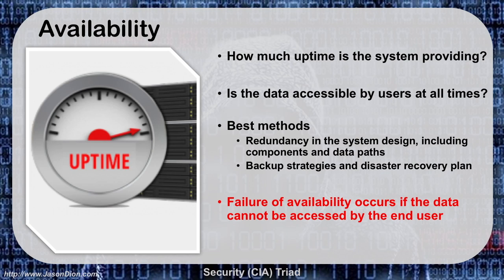The third component is availability — that's the A in CIA. Availability is all about uptime and accessibility. How much uptime is the system providing? Is the data accessible by all users at all times? The ways we achieve this include redundancy and backup. With redundant system design, including redundant components and data paths, we can ensure strong uptime. Good backup strategies and disaster recovery plans mean that if we do go down, we can get back up quicker.